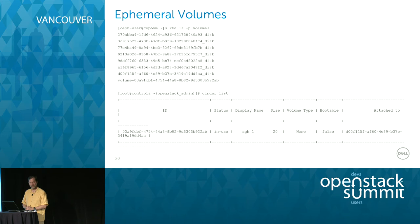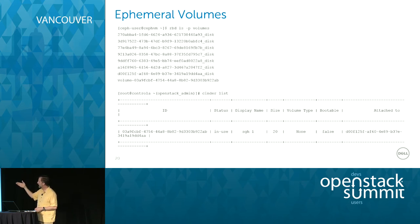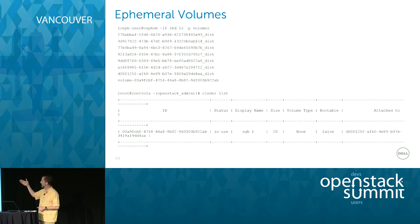Regarding ephemeral volumes: KVM creates an ephemeral volume when you set that boolean mentioned previously, but you don't actually see it from Cinder. Here's a list of disks in Ceph — and the last one is a Cinder volume. The difference is that ephemeral volumes have a UUID with a prefix of '_disk', and that's your ephemeral disk.